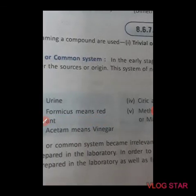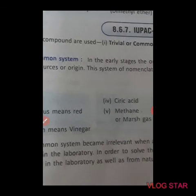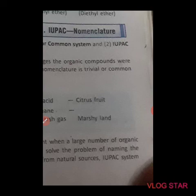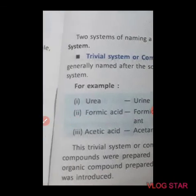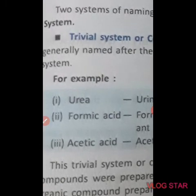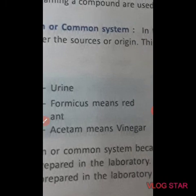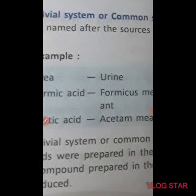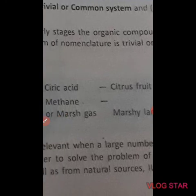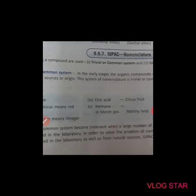In this system, nomenclature means the naming of a compound. Naming of a compound is usually of two types: the common system or tribal system, and the second is the IUPAC system. In the common system, used in earlier stages, urea comes from urine, formic acid comes from 'formicaceous' meaning red ant, acetic acid comes from 'acetum' meaning vinegar, citric acid comes from citrus food, and marsh gas or methane comes from marshy land.